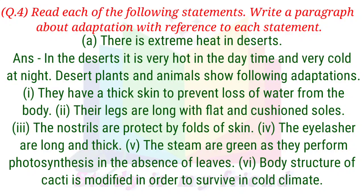A. There is extreme heat in deserts. Answer: In the deserts it is very hot in the daytime and very cold at night. Desert plants and animals show the following adaptations: 1. They have a thick skin to prevent loss of water from the body. 2. Their legs are long with flat and cushion soles. 3. The nostrils are protected by folds of skin. 4. The eyelashes are long and thick. 5. The stems are green as they perform photosynthesis in the absence of leaves. 6. Body structure of cacti is modified in order to survive in hot climate.